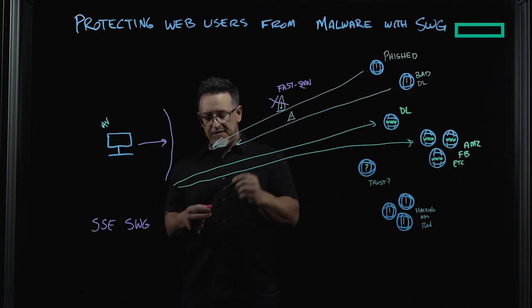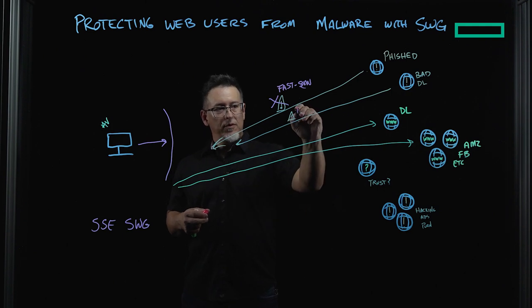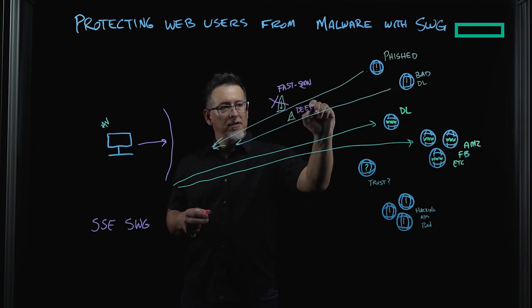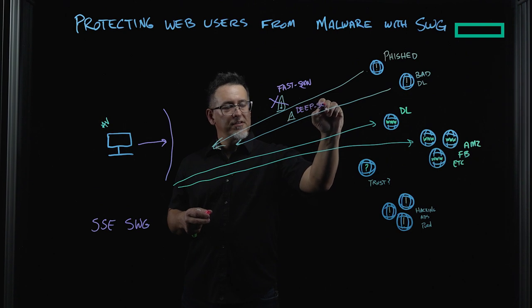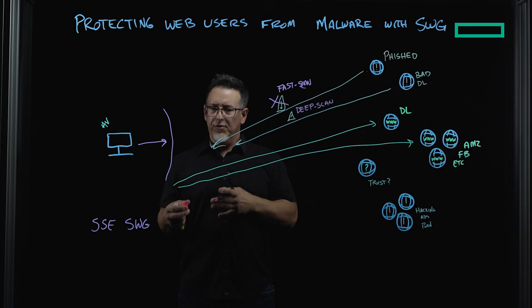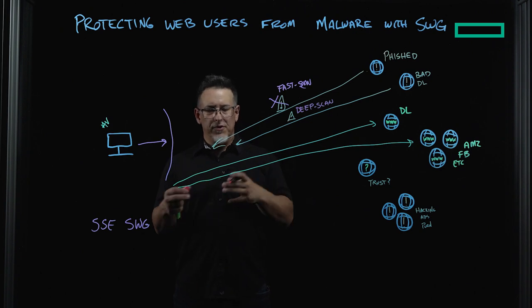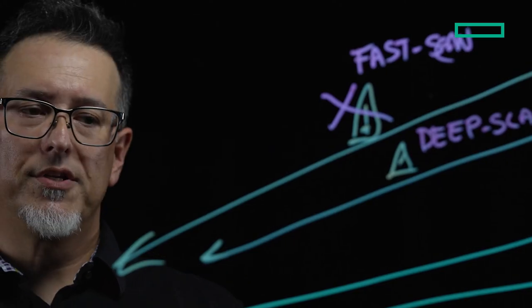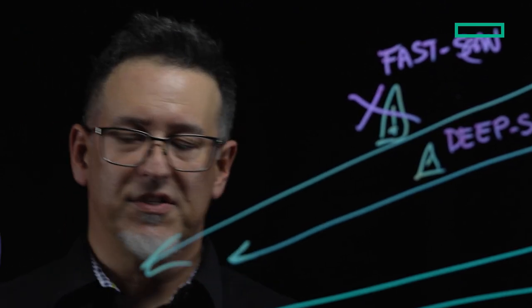These hidden threats we would address with something called DeepScan, which is a type of analysis that looks beyond simple AV signatures. So for those hidden and concealed exploits and malware, it can actually be discovered that way.